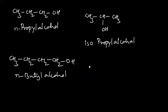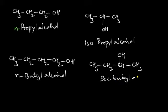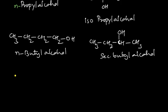Another example: CH₃CH₂CH(OH)CH₃. The OH group is placed at the second carbon. This is a higher member where the OH group is attached to a carbon directly connected to carbon number one and carbon number two — therefore this molecule is named secondary butyl alcohol.